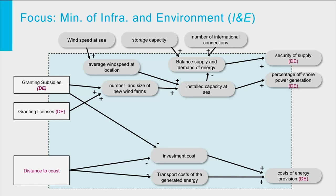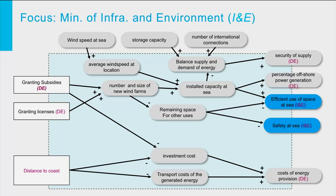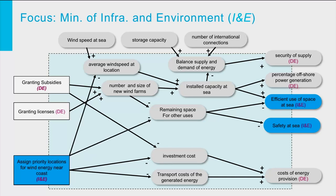We now return to the system diagram and will use a blue color for the Ministry of Infrastructure and Environment, adding their two relevant prime criteria for the North Sea: efficiency of space use and safety at sea. Installing wind farms may contribute to the efficiency of use, but less space will be remaining for other uses, possibly also affecting safety at sea. It appears the Ministry is the prime responsible agency for assigning locations for wind energy at sea. We therefore modify the original diagram by substituting the original means 'distant to coast' with 'assigned priority locations near coast' and assign it to the Ministry. The licensing process is shown as the joint responsibility of the Ministry of Infrastructure and Environment.